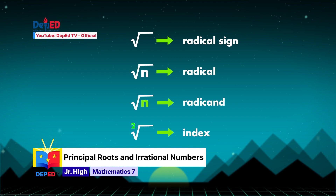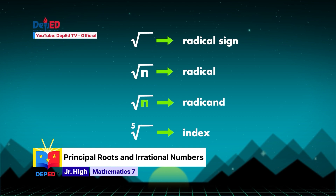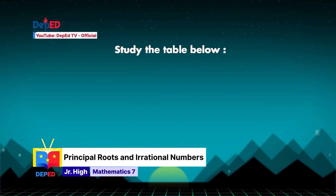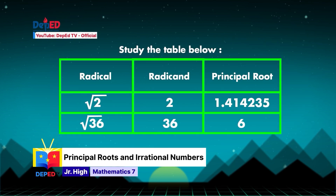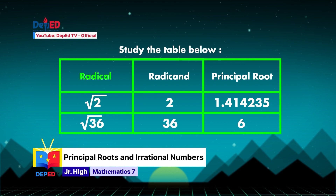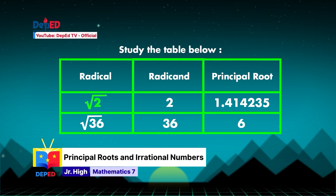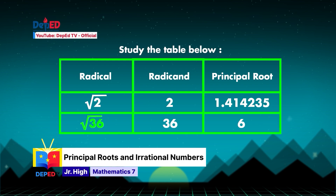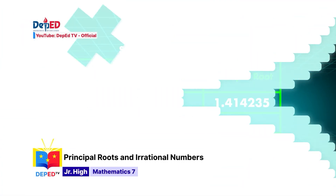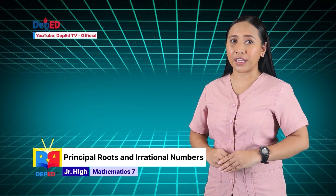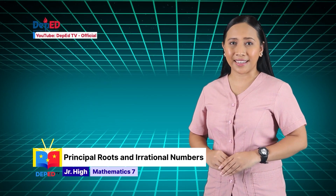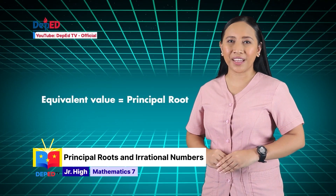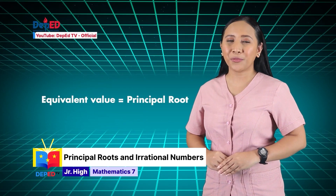The index can also be 3, 4, 5, and so on. If our index is 2, no need to write it. As you have seen in the table, we have the radical and the radicand. When we get the answer of the square root of 2 and the square root of 36, that is called the principal root. You have tried to get the equivalent value of each of the given using a scientific calculator, and you have also known that the equivalent value is called the principal root.